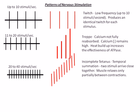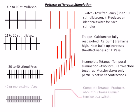Finally, when the nerve provides stimuli to the muscle at 40 or more stimuli per second, the contraction pattern is a smooth muscle contraction known as complete tetanus. This contraction type can generate a significant amount of force and is the most functional contraction pattern.